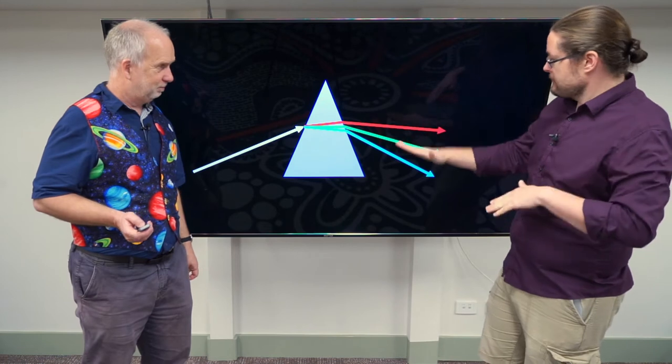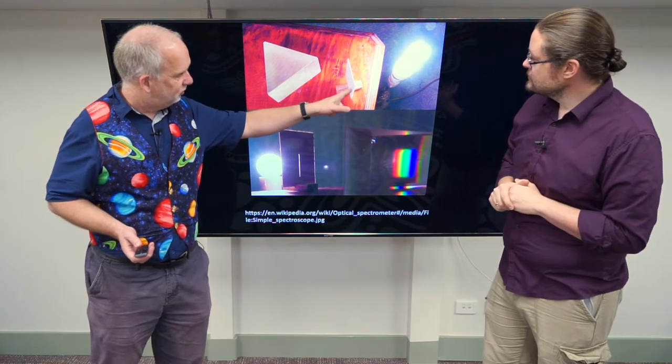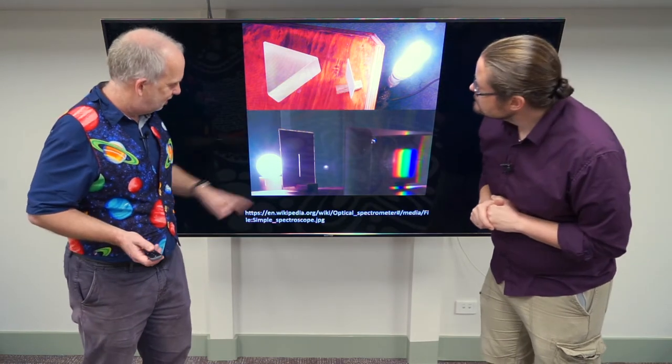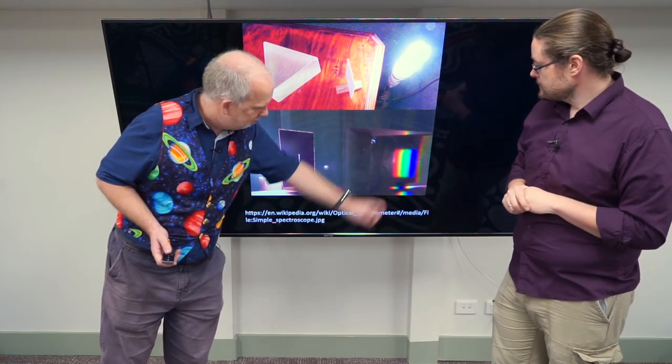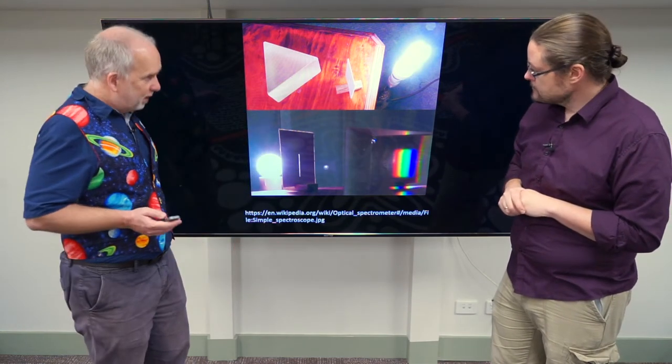Based on how much, essentially, it's being angled away. So here, courtesy of Wikipedia, is an example of this. They've got a light, put it through a slit, a piece of cardboard with a slit in it, and you can see that then goes through a prism, and you get the red, green, blue light spread out.